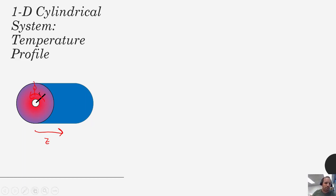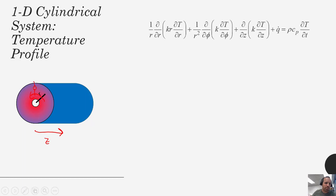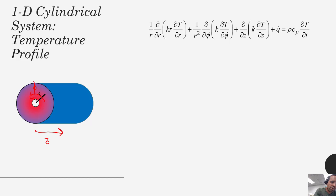We often talk about hollow cylinders where you get a cylindrical wall, or you might have a hollowed-out section like in a pipe. When we're talking about conduction, we're talking about heat transfer from the inner wall of the pipe outward to the outer wall of the pipe.